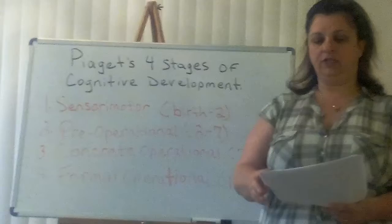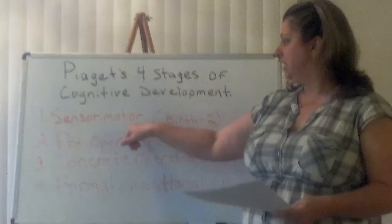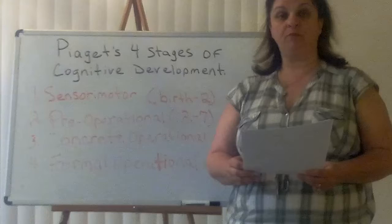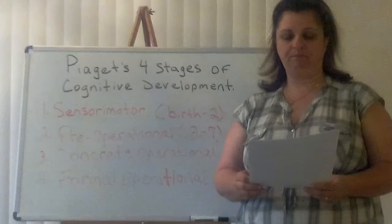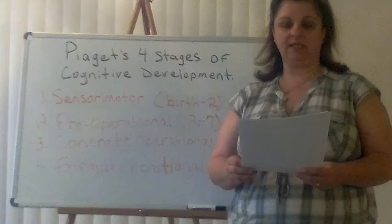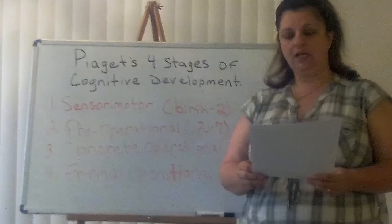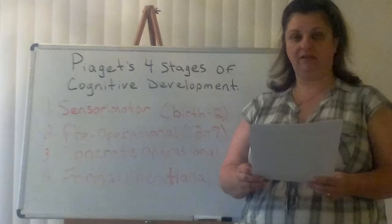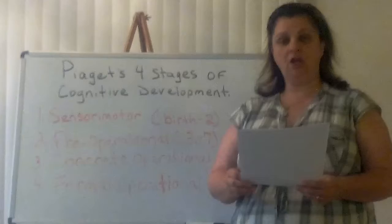Stage one: sensorimotor, birth to age two. An infant progresses from reflexive, instinctual action at birth to the beginning of symbolic thought. The infant constructs an understanding of the world by coordinating sensory experiences with physical actions. Reflexive and instinctual actions would be things such as grasping, kicking feet, and opening and closing fingers repetitively. The main achievement during this stage is object permanence — knowing that an object still exists even if it is hidden, such as in the game of peek-a-boo.